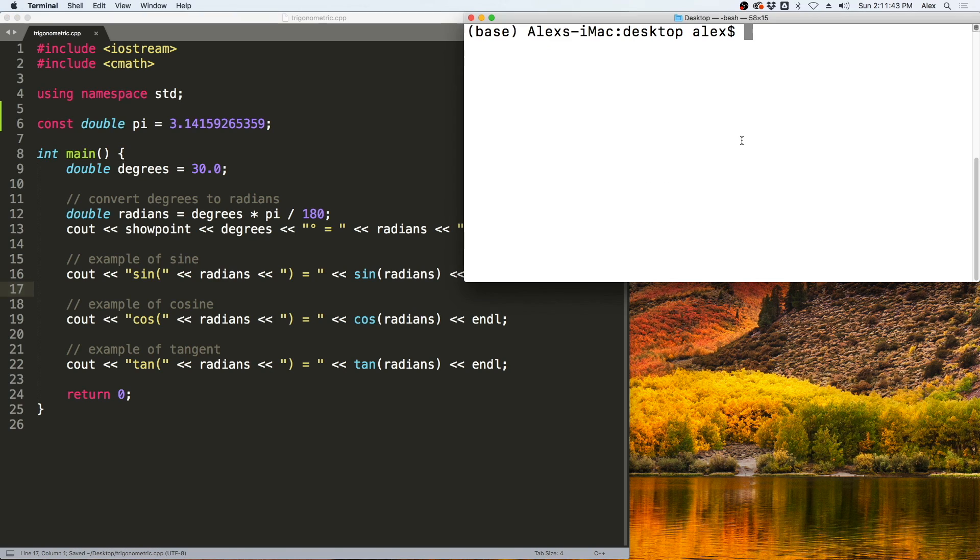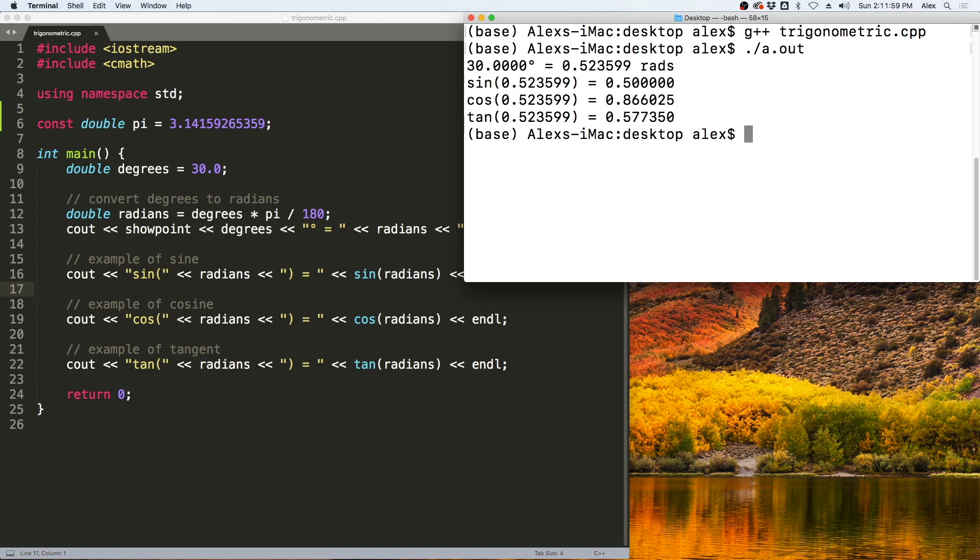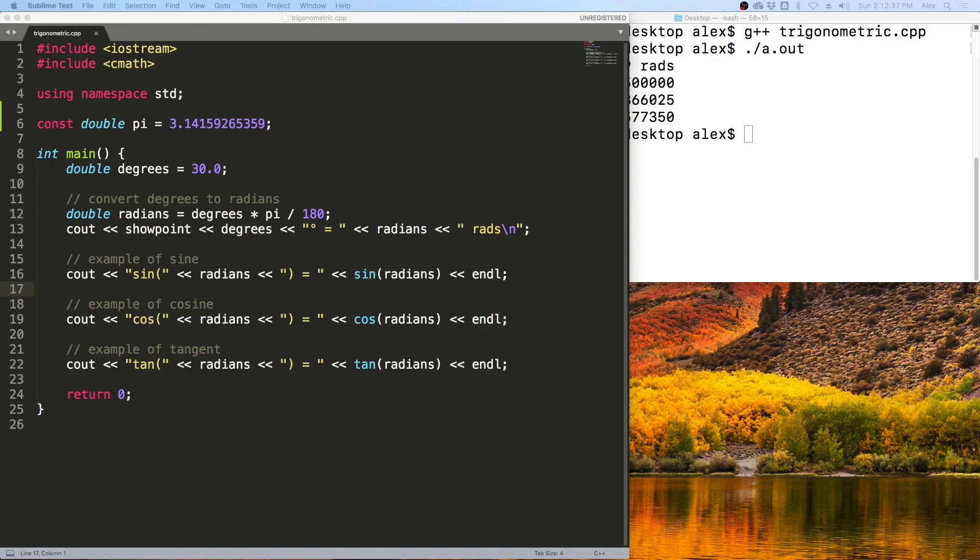Let's take a look at that from the terminal. We can compile this by using g++ and the name of the program, and then wait for a second, and it creates our A.out, which can be run using ./a.out. We get the answer to converting the degrees to radians right here. And then we get that radians being passed to our three functions, which gives us the answer that we are looking for.